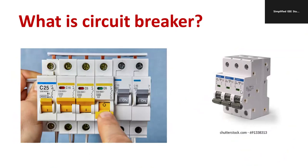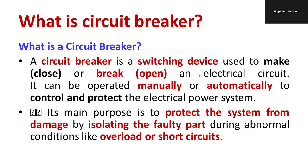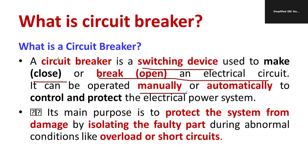The circuit breaker is mainly used for protecting equipment against overloading or short circuiting. A circuit breaker is a switching device which is used to make or break the electrical circuit. The making and breaking can be done either manually or automatically. Ultimately, the purpose of a circuit breaker is to protect the system from damage — that is, to isolate the healthy part from the faulty part.